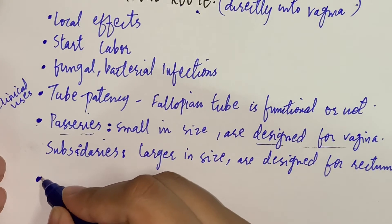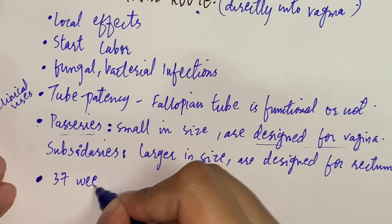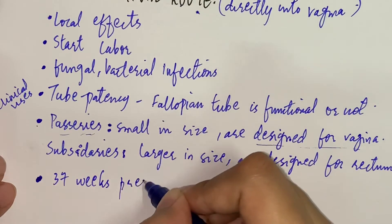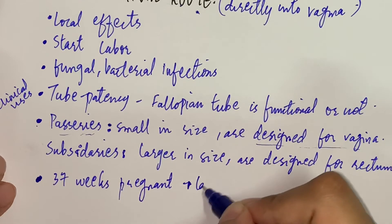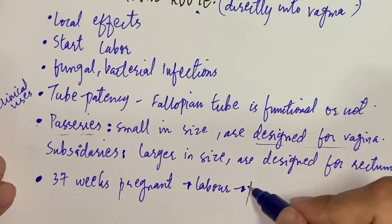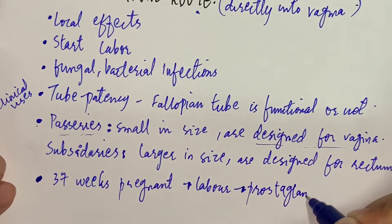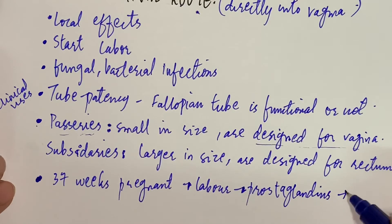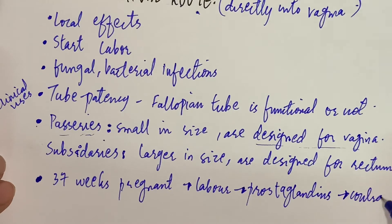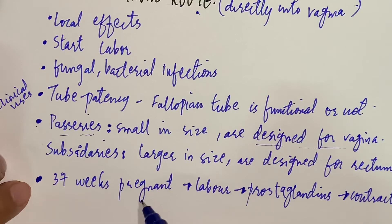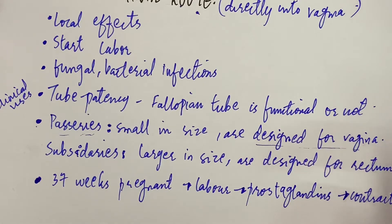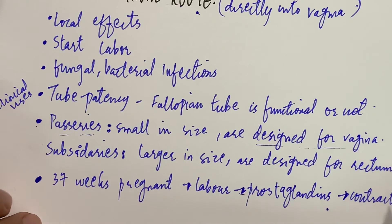The transvaginal route is also used when a female is 37 weeks pregnant and has not gone into labor. We can give prostaglandins via this route, which results in uterine contraction. If the baby is 37 weeks along and respiration is being interrupted, labor is required, so prostaglandins are administered transvaginally to cause the vagina to contract and the baby to come out.